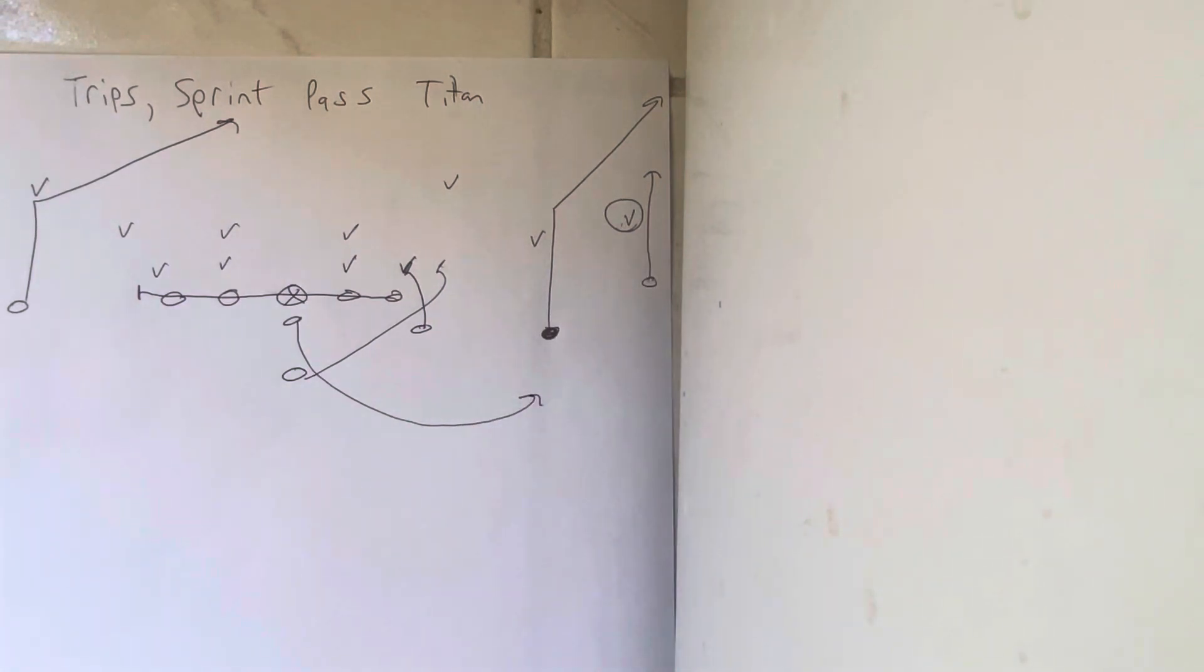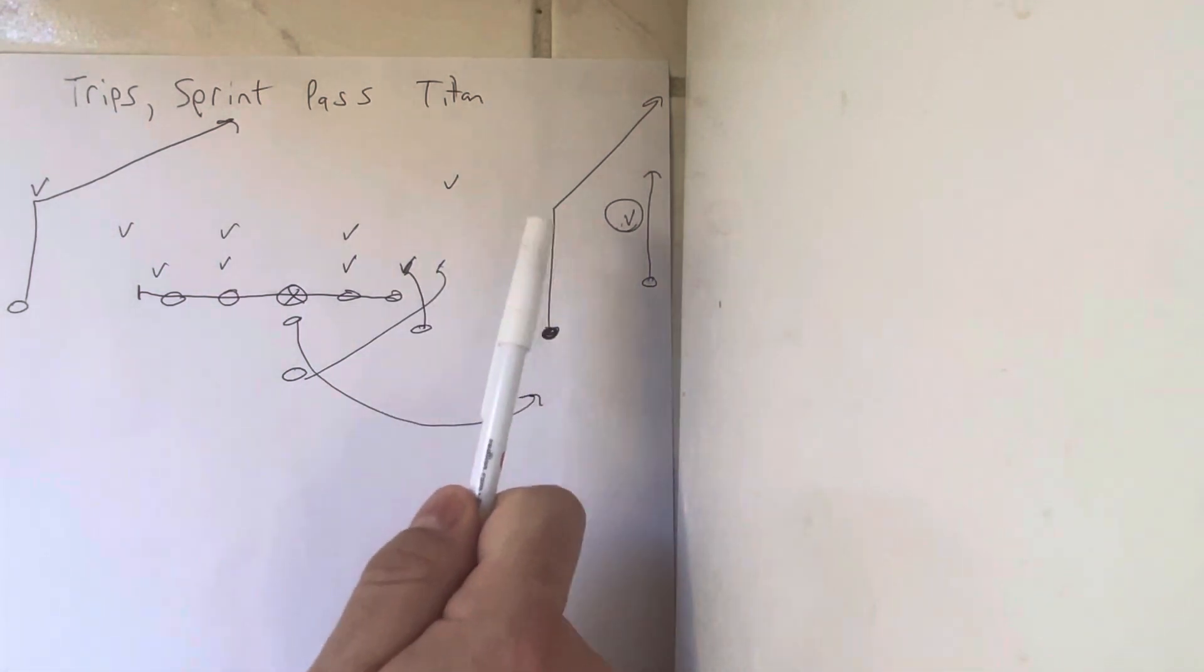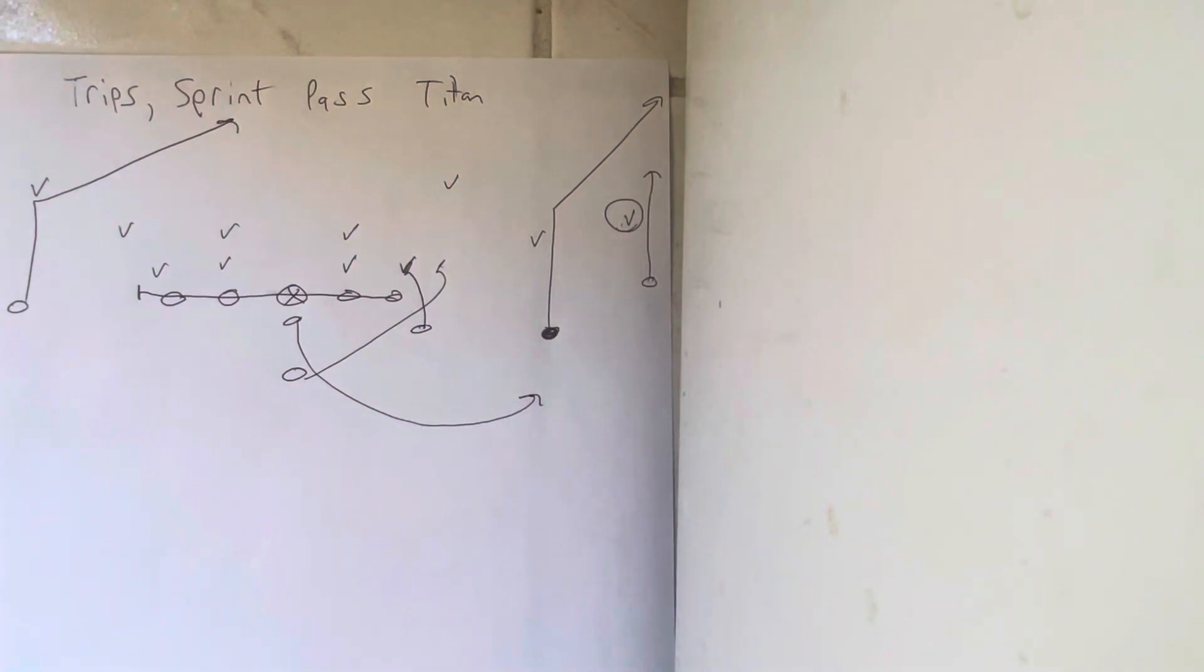And that's how you run Trips sprint right tight end. The key to the whole thing is it works really well if they move number two in the triple count out over the top of the defensive number two receiver. Because then the B-back doesn't have to log anybody, and he can help out on number one. That's huge.